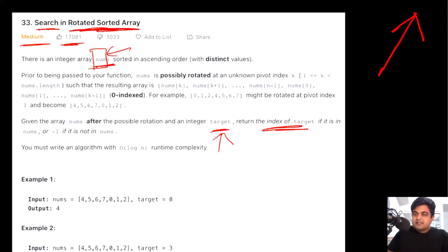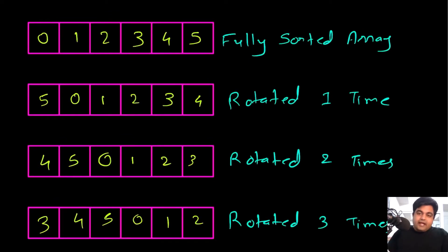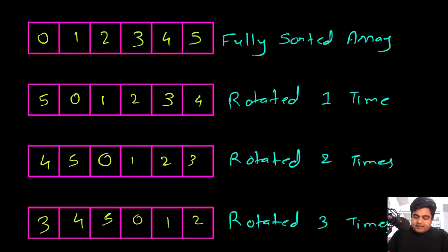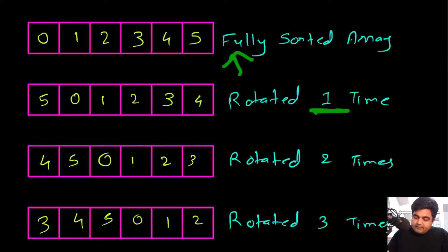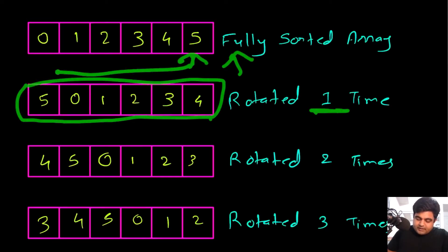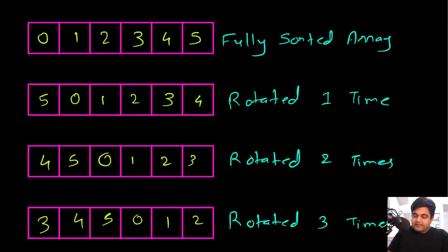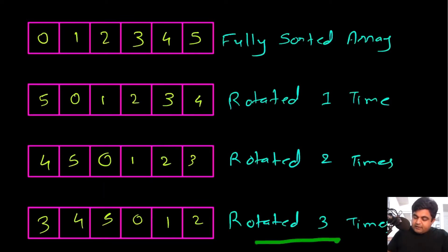The special part about this question is that the nums array we are given is actually a sorted array that has been rotated certain times. A rotated sorted array starts as a fully sorted array with all elements in ascending order. When we rotate one time, we take the rightmost element, put it on the leftmost side, and shift all other elements one position to the right. Rotating two times shifts the last two elements to the front, and rotating three times shifts three elements.